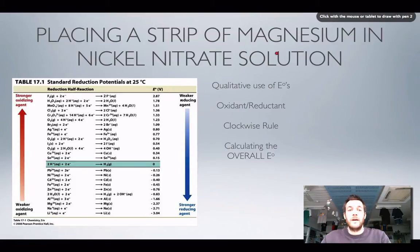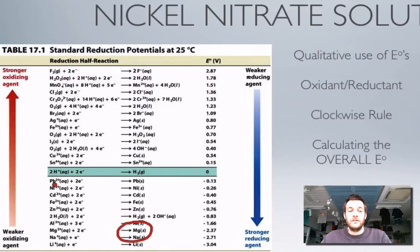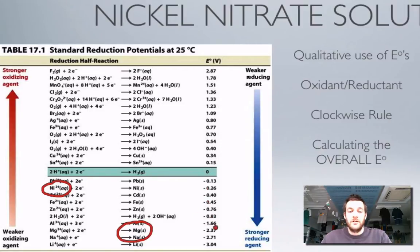The first reaction is between magnesium and nickel nitrate. My first step should always be to decide what I've got present to begin with. I've got magnesium atoms because I've got a strip of magnesium, and I've got nickel ions in my nickel nitrate solution. A qualitative use of the standard reduction potentials means I look at these and decide which one's more negative — well, magnesium is. That means this equilibrium lies further to the left than the nickel one, because magnesium gives up more electrons than nickel does.